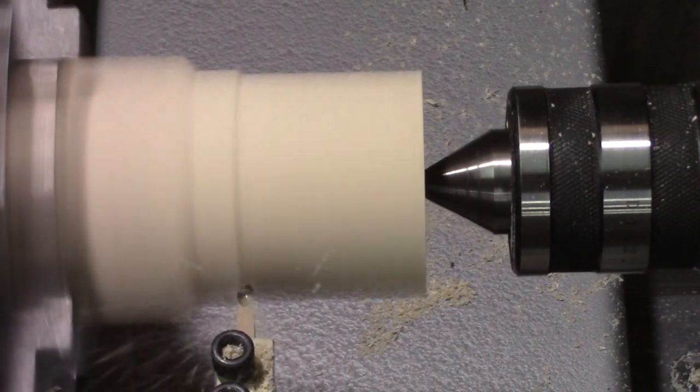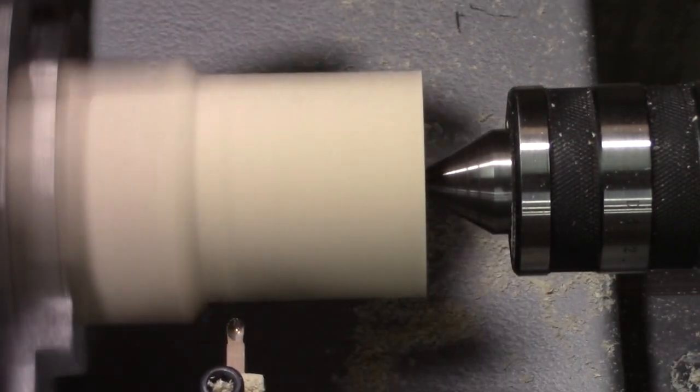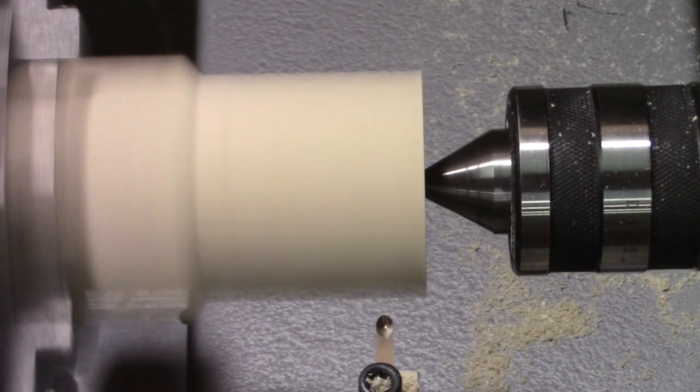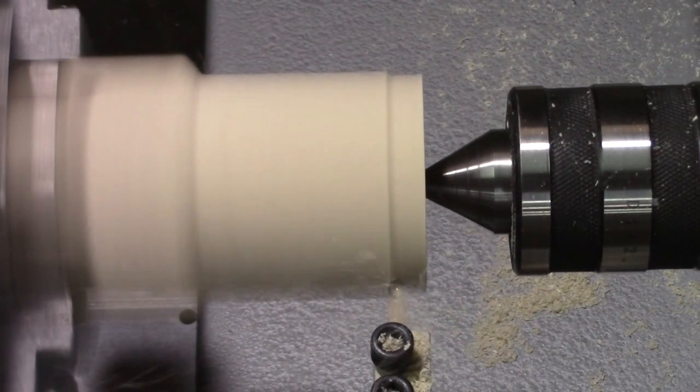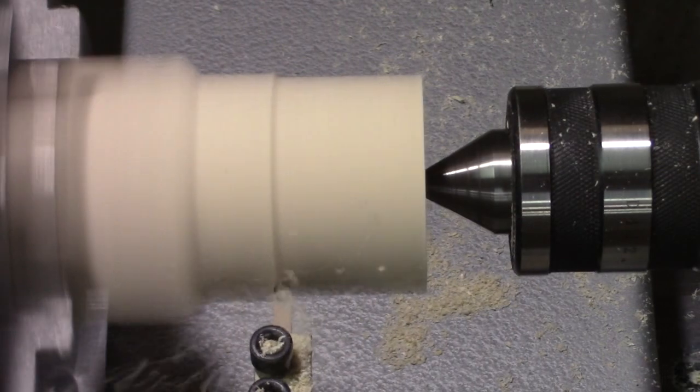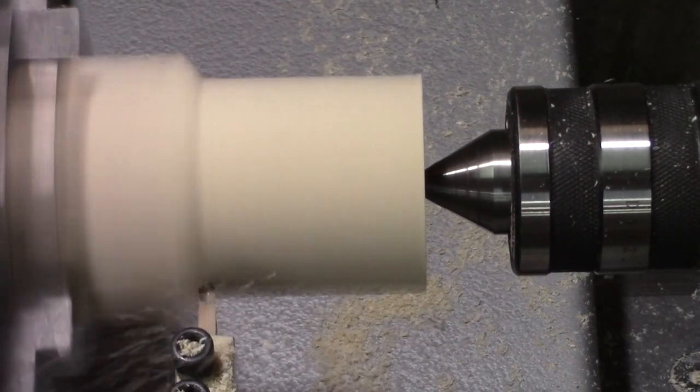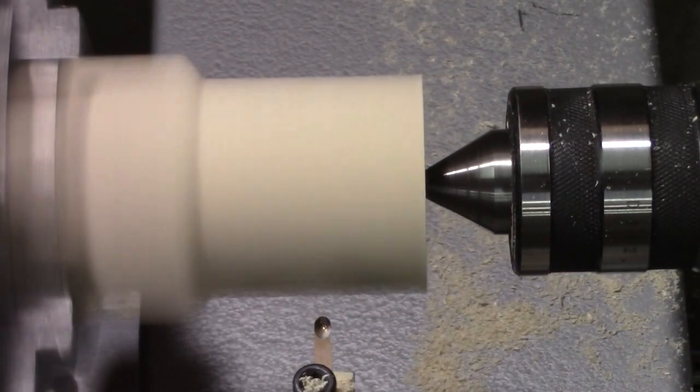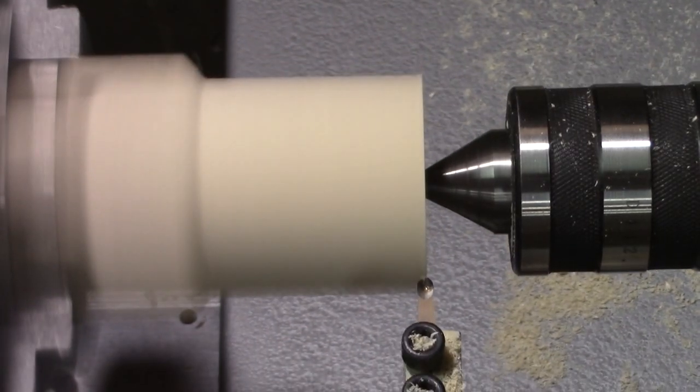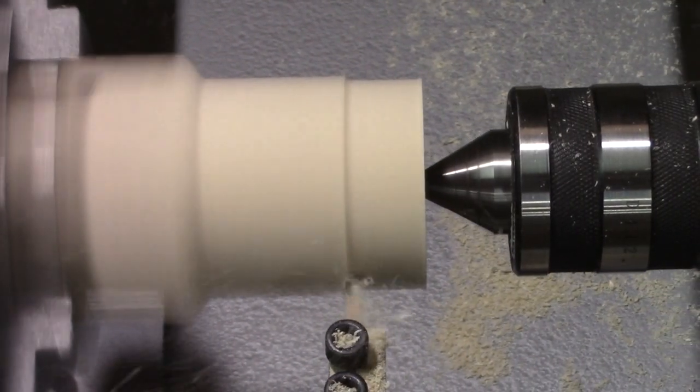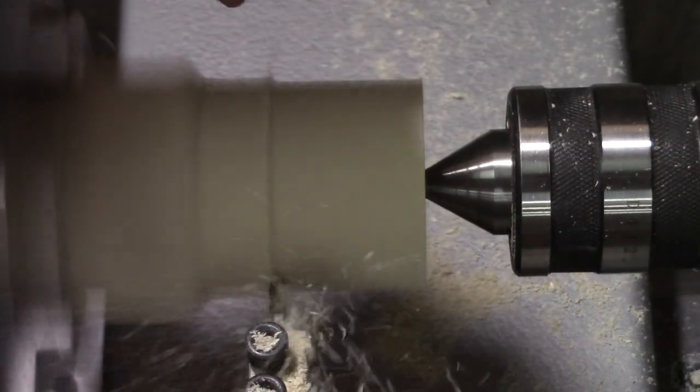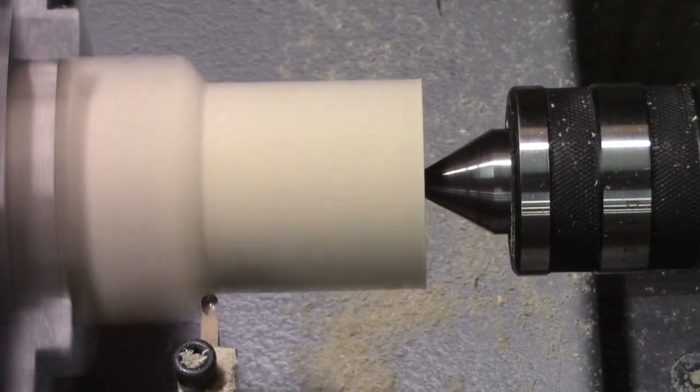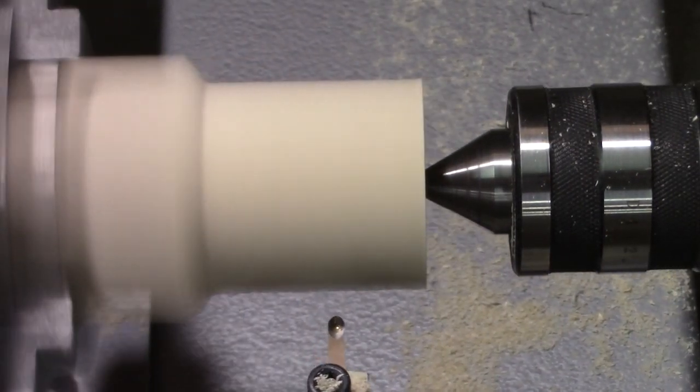Looks like we're cutting fairly smooth because there's no whiskers sticking up around here. You can see where it's cutting on the left side of the cutter and the tip to some degree, most of the time.